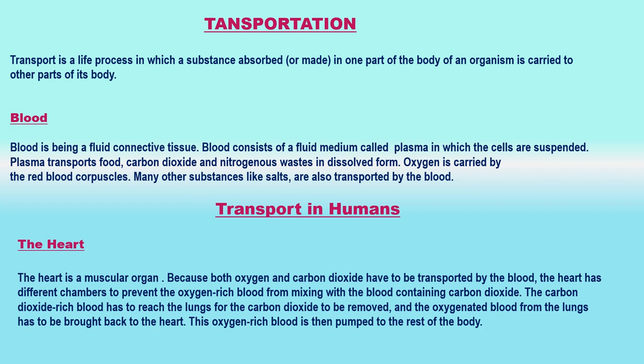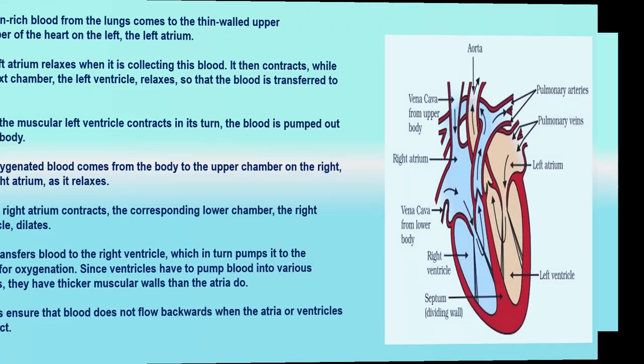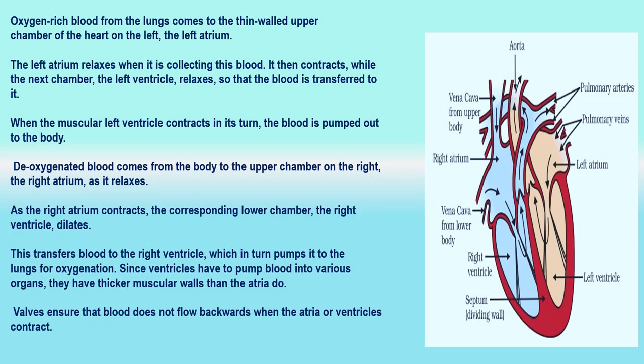Heart: The heart is a muscular organ. Because both oxygen and carbon dioxide have to be transported by the blood, the heart has different chambers to prevent the oxygen-rich blood from mixing with the blood containing carbon dioxide. The carbon dioxide-rich blood has to reach the lungs for carbon dioxide to be removed, and the oxygenated blood from the lungs has to be brought back to the heart. This oxygen-rich blood is then pumped to the rest of the body. The heart is roughly triangular in shape.